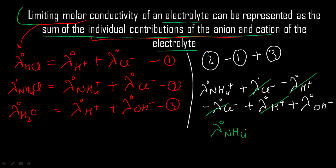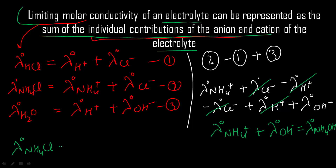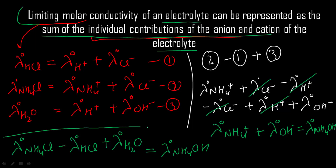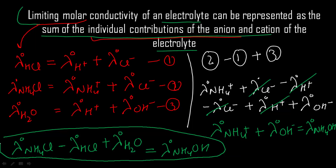What I get is limiting molar conductivity of NH₄⁺ plus limiting molar conductivity of OH⁻, which equals the limiting molar conductivity of NH₄OH. So I conclude that limiting molar conductivity of NH₄Cl minus limiting molar conductivity of HCl plus limiting molar conductivity of water equals limiting molar conductivity of NH₄OH. This is the beauty of this law — I can manipulate known values to find the limiting molar conductivity of a new substance.